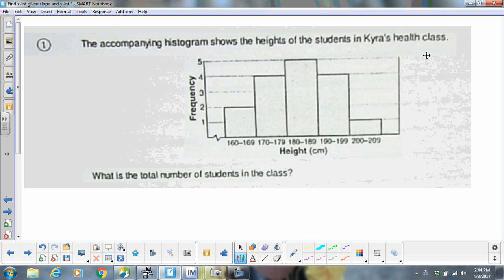It says it shows the heights of the students in Kira's class. And it wants to know the total number of students in the class. So all you're going to do here is count each one of your bars and then add that up.